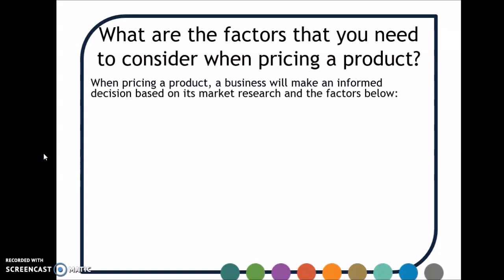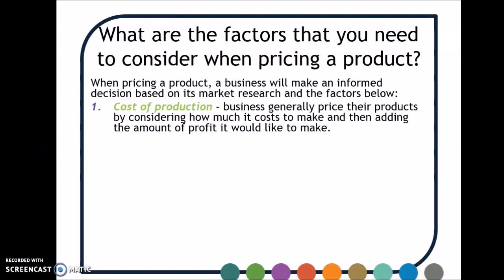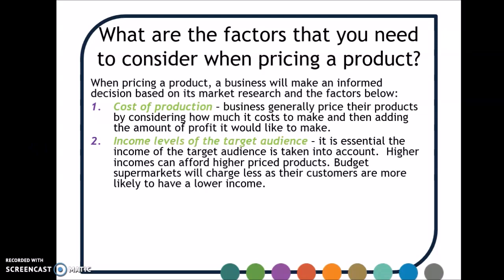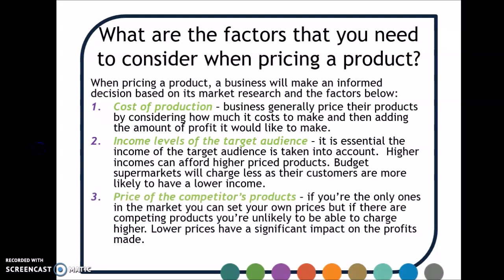What factors do you need to consider when you are pricing a product? You need to consider the cost of production — how much it costs you to make — and then to generate profit you add something on top of that. You need to take into consideration the income levels of your target audience, because if you out-price what they can afford they aren't going to buy it. And then the price of competitors' products: you need to know what they're charging, because if you're going to charge significantly more there's got to be a good reason, but if you undercut them, people might think that's a reflection on the quality of your product.